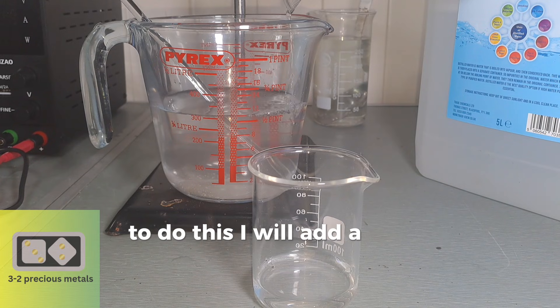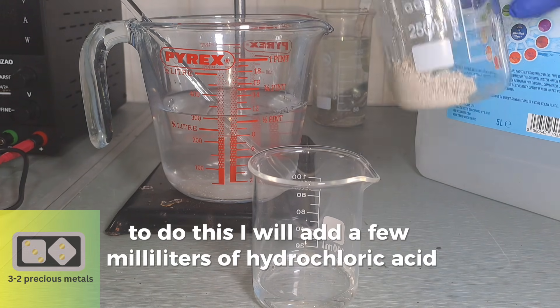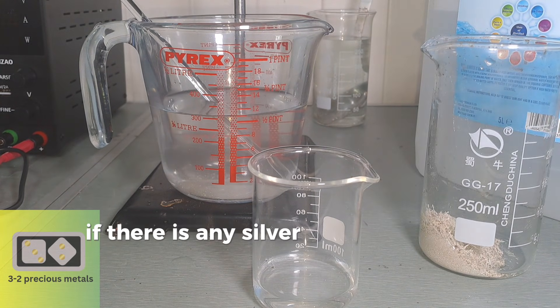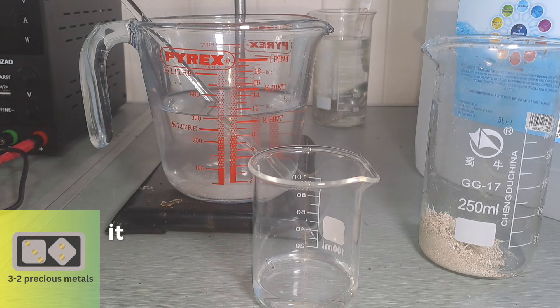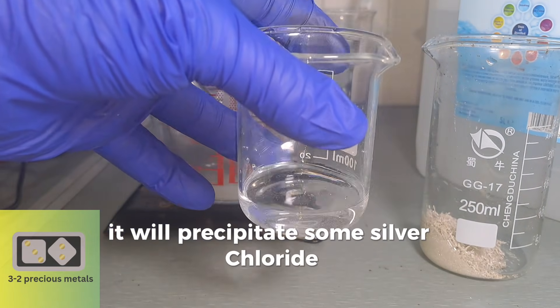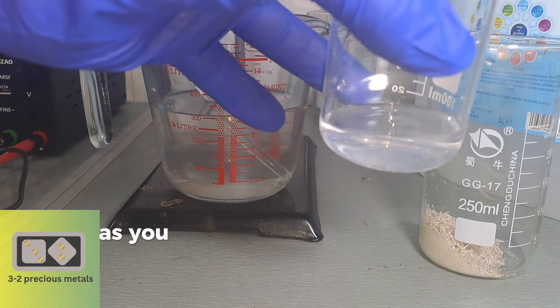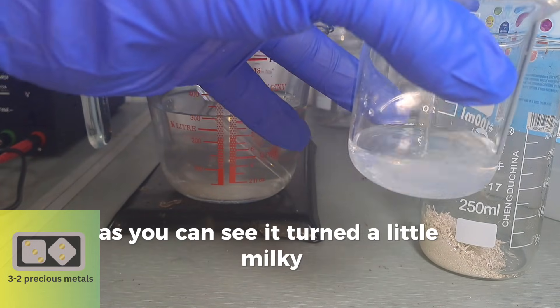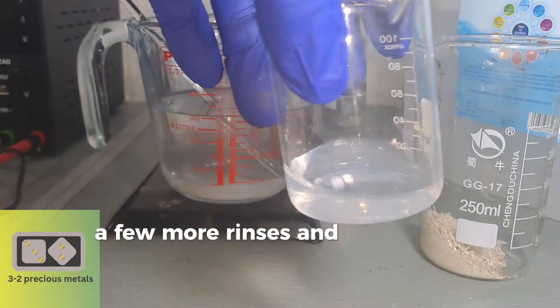To do this, I will add a few milliliters of hydrochloric acid. If there is any silver nitrate in the water, it will precipitate some silver chloride. As you can see, it turned a little milky. A few more rinses, and it should be good.